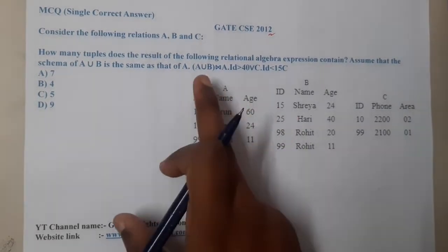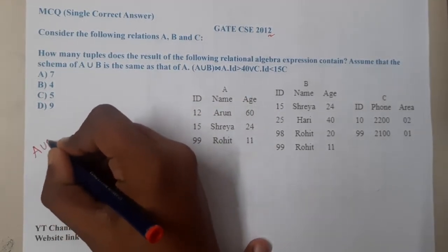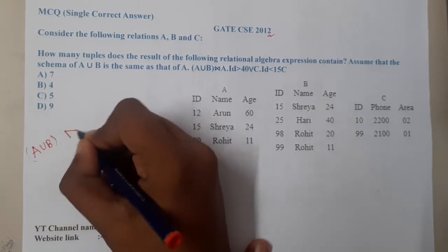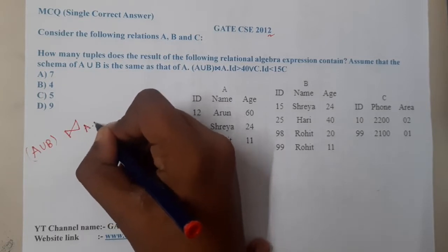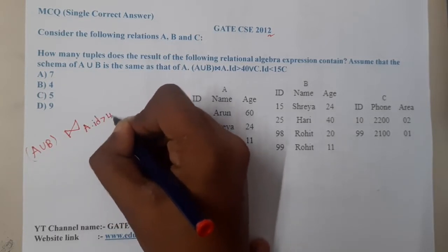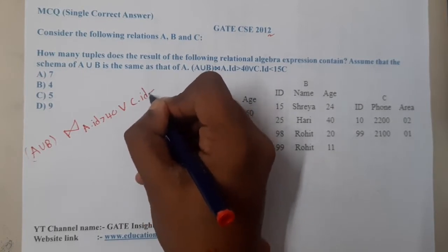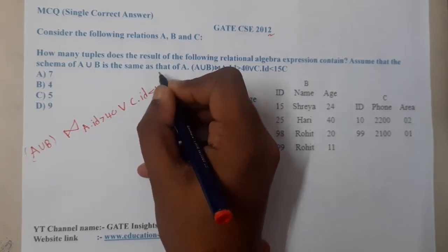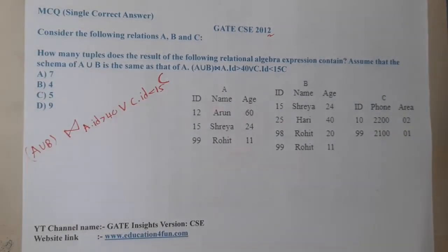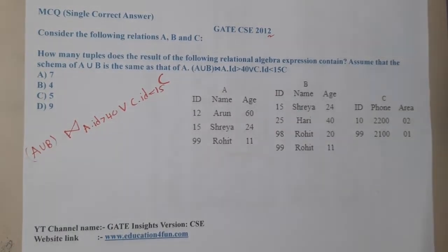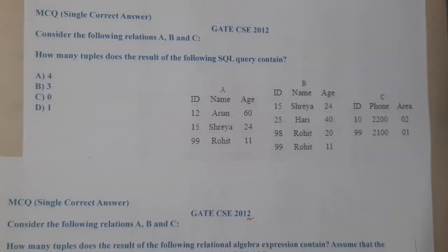Let me rewrite this query properly. We have A union B, with the condition that A dot id is greater than 40, or C dot id is less than 15. We are performing a cartesian product between A union B and C. That's the exact query. I believe this is a two-part question.